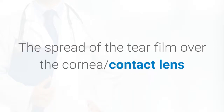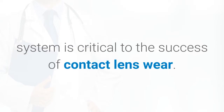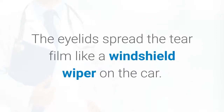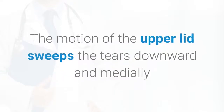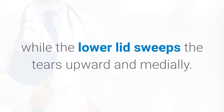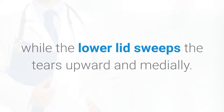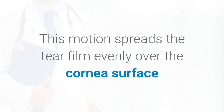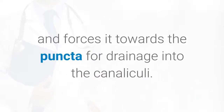The spread of the tear film over the cornea-contact lens system is critical to the success of contact lens wear. The eyelids spread the tear film like a windshield wiper on a car. The motion of the upper lid sweeps the tears downward and medially while the lower lid sweeps the tears upward and medially. This motion spreads the tear film evenly over the corneal surface and forces it towards the puncta for drainage into the canaliculi.